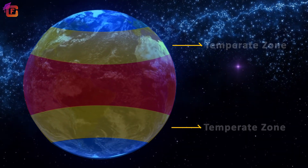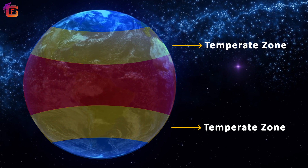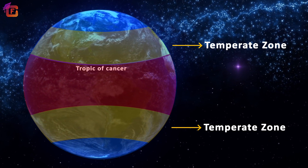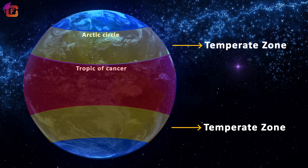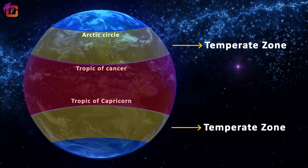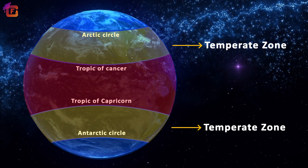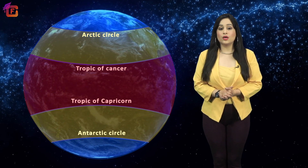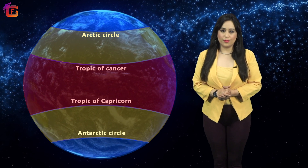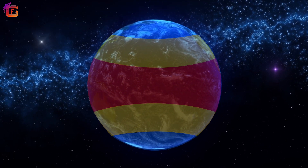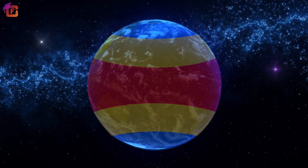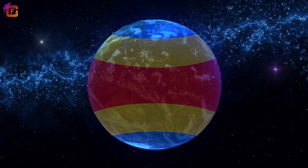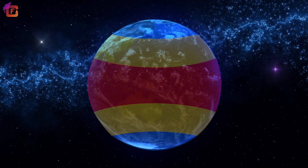The temperate zone is the zone of moderate heat. It lies between the Tropic of Cancer and the Arctic Circle in the Northern Hemisphere, and the Tropic of Capricorn and the Antarctic Circle in the Southern Hemisphere. The sun is never overhead any time of the day beyond the Tropic of Cancer and the Tropic of Capricorn. The two zones, one in the north and another in the south, receive slant rays. As such, these two zones have moderate temperature and rainfall. They are never too cold and never too hot.